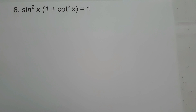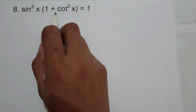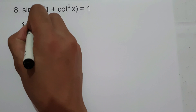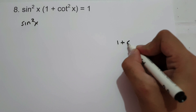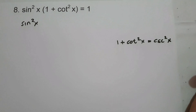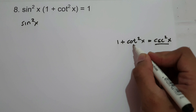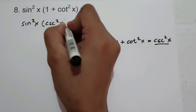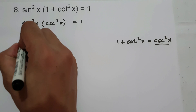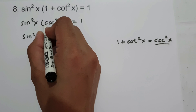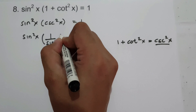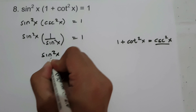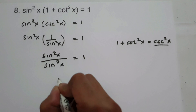On example number 8, we have sine squared x multiplied by the quantity of 1 plus cotangent squared x equals 1. In order for us to prove the given identity, let us rewrite sine squared x. We all know that 1 plus cotangent squared x is equal to cosecant squared x. So let us change 1 plus cotangent squared x as cosecant squared x equals 1. And then let us write sine squared x times cosecant squared x as 1 over sine squared x equals 1. Let us simplify: sine squared x times 1 over sine squared x, that is 1 equals 1.